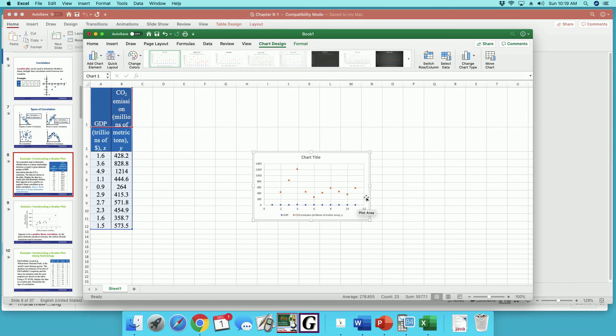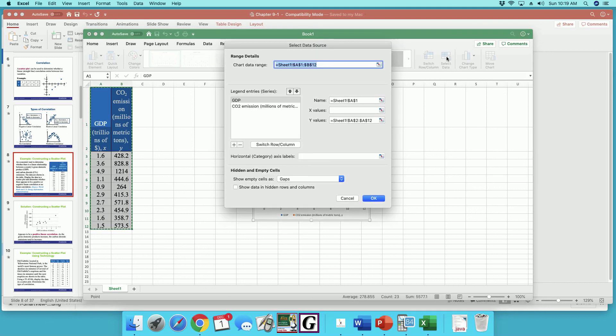What I want to do is get rid of those blue dots. I only want it to do the Y one. So I'm going to select data, and my X values are going to be here.